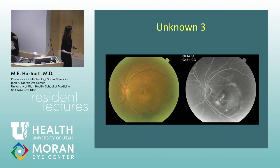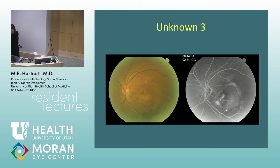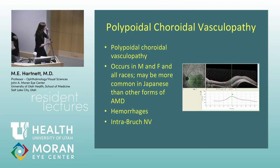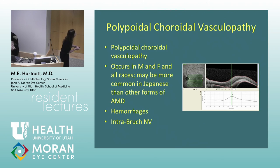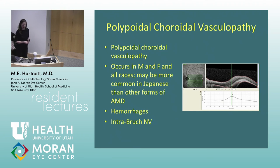Another case associated with hemorrhage, hypertension, and pachychoroid — this is polypoidal choroidal vasculopathy. The image shows the area of the polyp, a sub-RPE hemorrhage, and some exudation above it. It occurs in both males and females. Hemorrhages can be intra-Bruch's membrane, which is somewhat unusual.